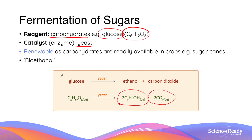This method of producing ethanol is regarded as renewable because carbohydrates — that is, the glucose — can be readily available in crops such as sugar canes. This is the main way through which bioethanol is produced, which will be discussed in more detail in another video.